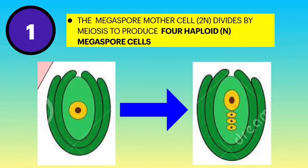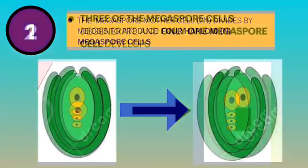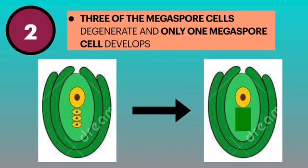The megaspore mother cell divides by meiosis to produce four haploid megaspore cells. As we can see in the diagram, the yellow one with the dot inside it becomes from 1 to 4 haploid megaspore cells. Even though there are 4 of them, 3 of them degenerate and only 1 megaspore cell develops into the next phase.